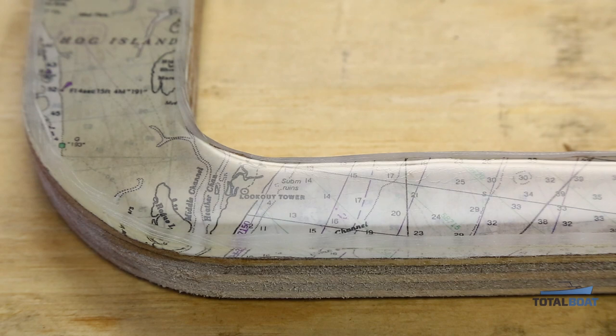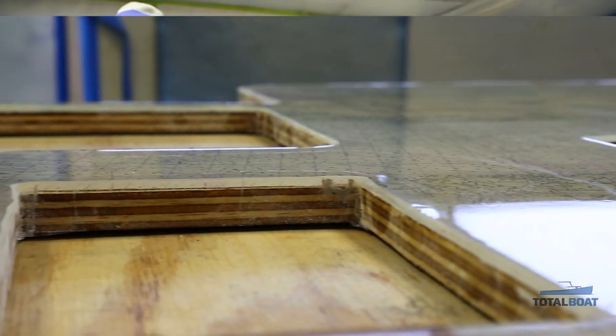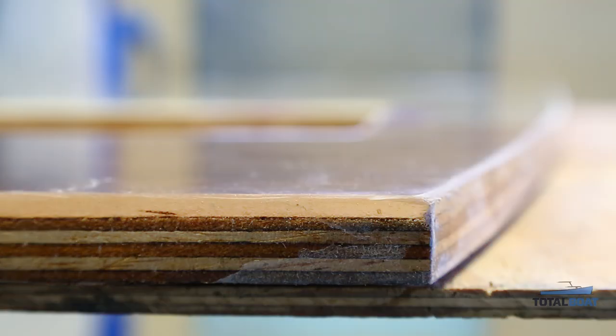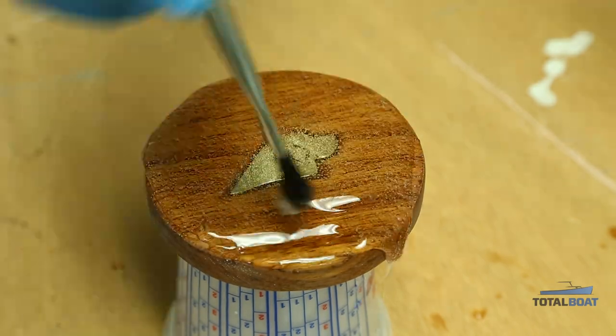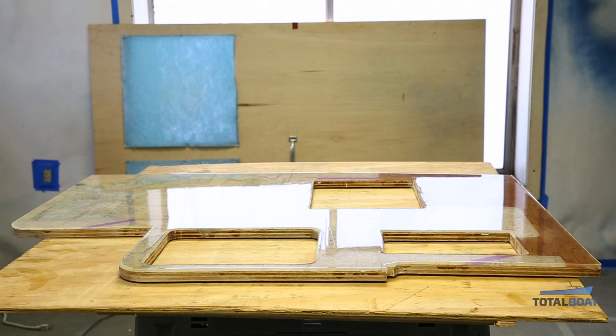TotalBoat tabletop epoxy is available in two quart and two gallon kits. Here we've used almost a full gallon of mixed epoxy, resulting in 1/8 of an inch of coverage. You can use tabletop epoxy to build a glossy, durable, level surface of any thickness on a part as small as a coaster or as large as a bar counter.